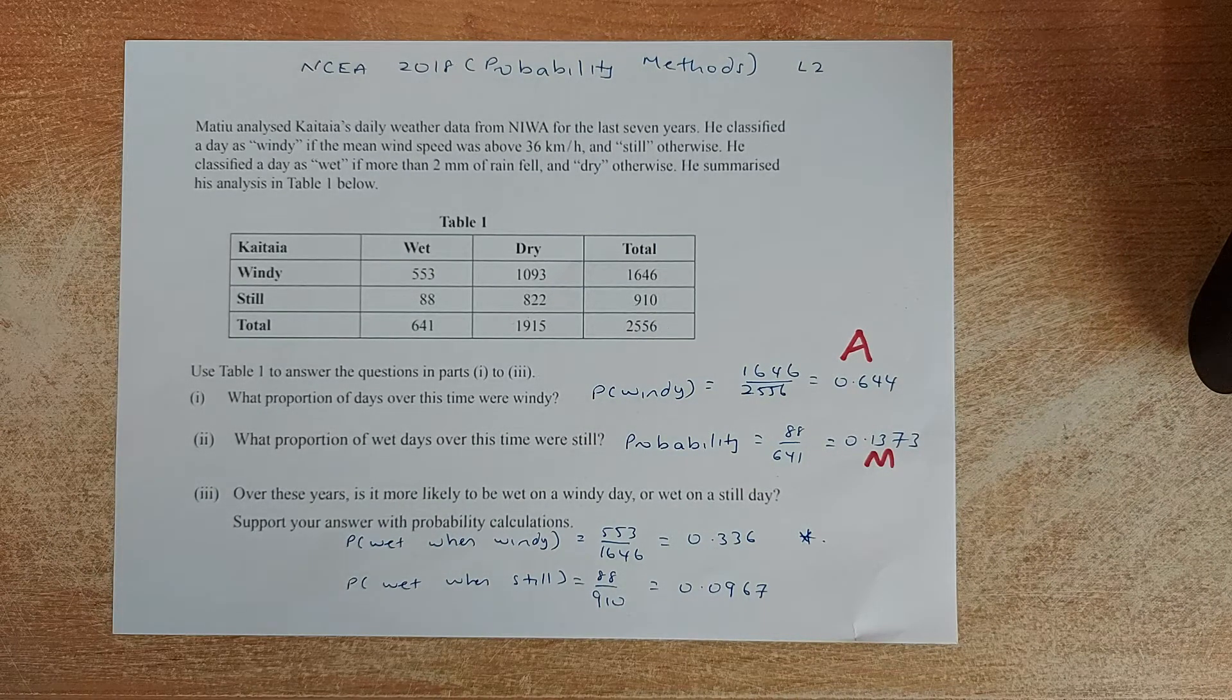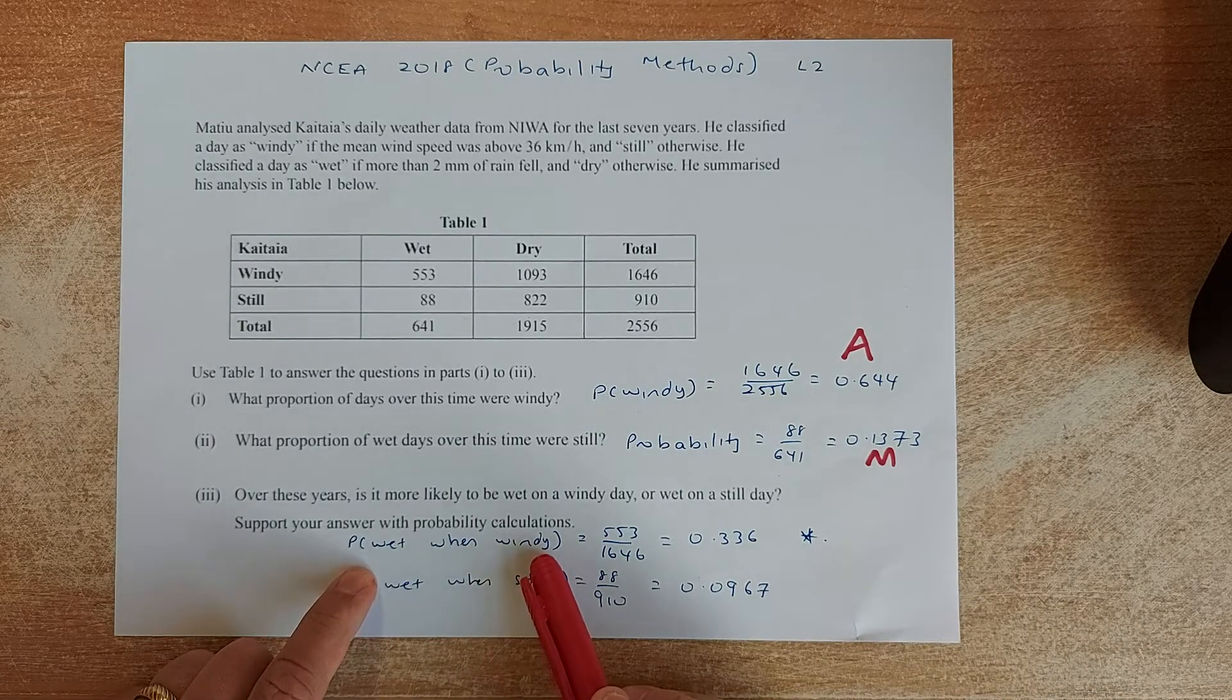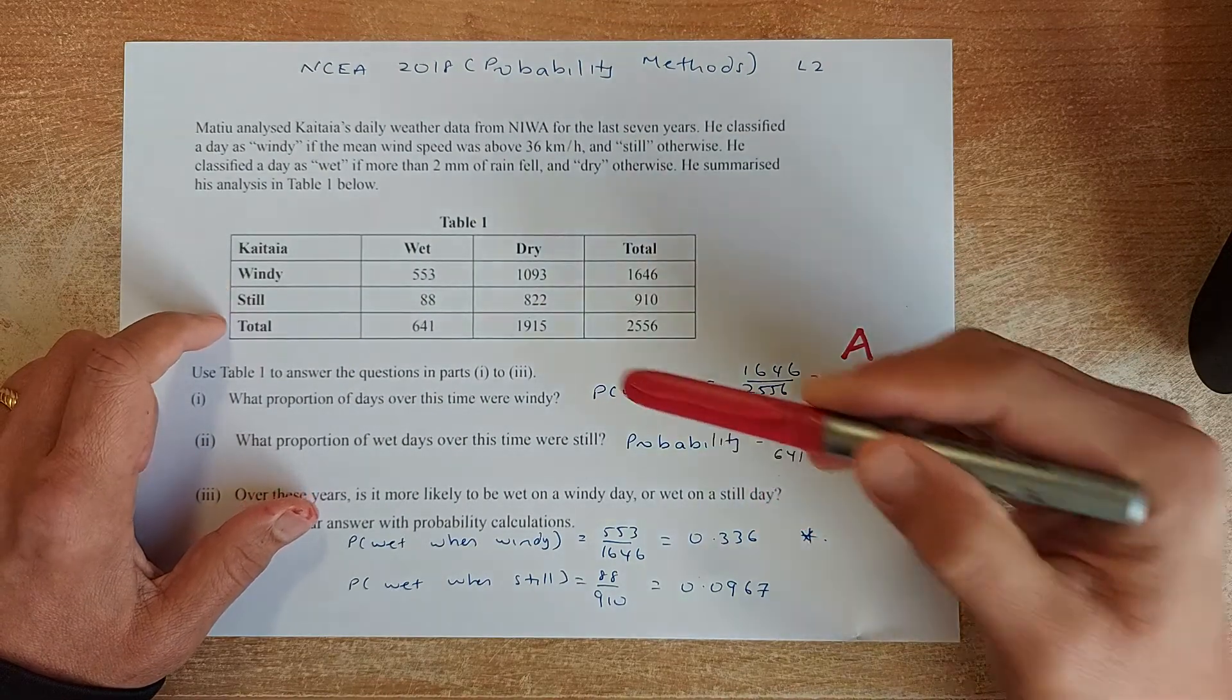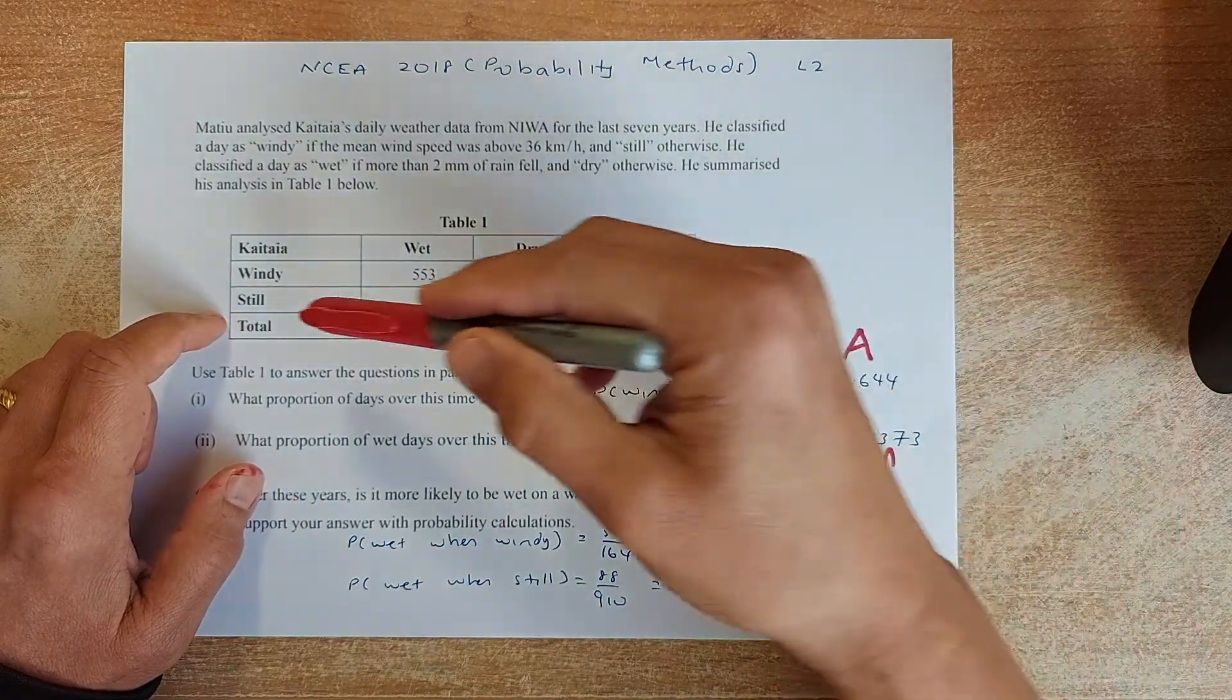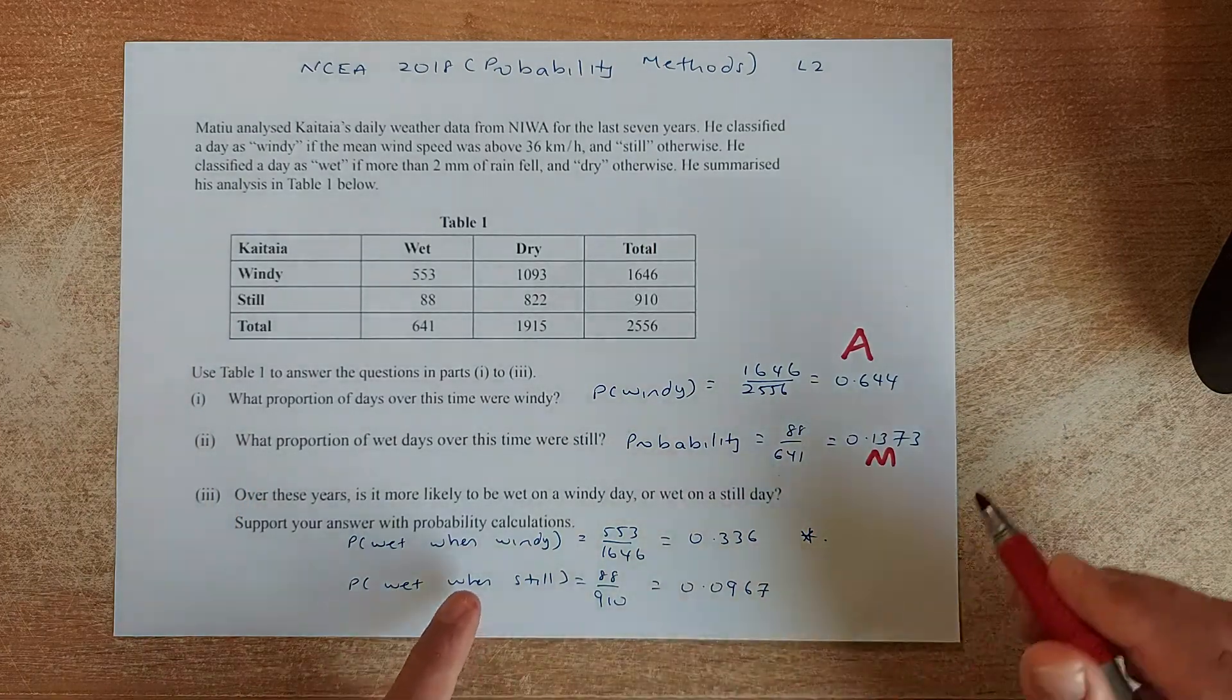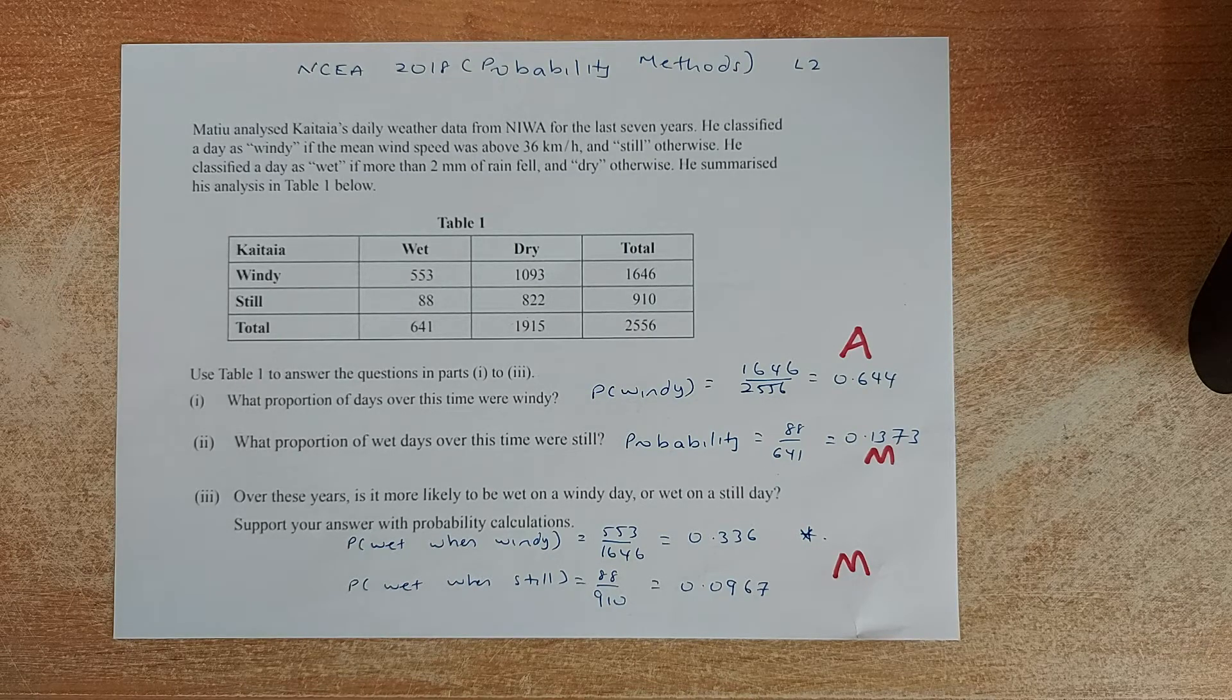Last but not least. Over this year, is it more likely to be wet on a windy day or wet on a still day? So we need to calculate the probability. So probability of wet when windy. So wet when windy, so windy, so wet when windy is 553 over 1,646 and come up to 0.36. Still when windy - wet when still. Wet when it is a still day, so it's 88 out of 910 is 0.967. So this probability is bigger than that. So, it is more likely to be wet when windy. And that will give you a merit. So it is more likely it to be more wet when windy. Got it? So great.